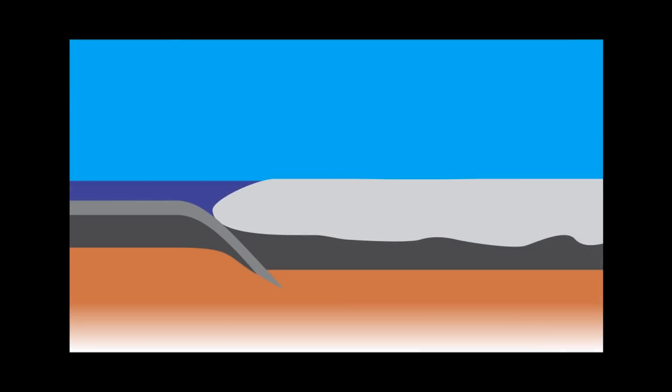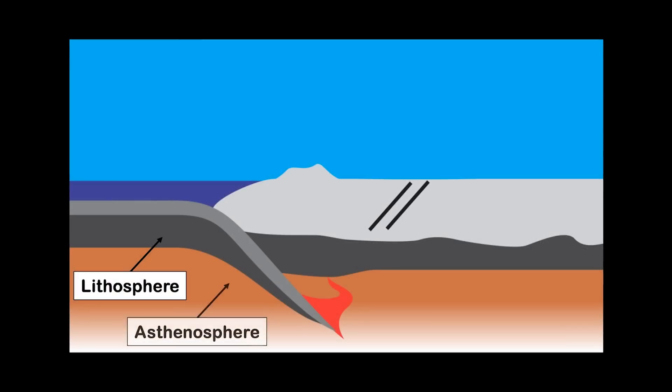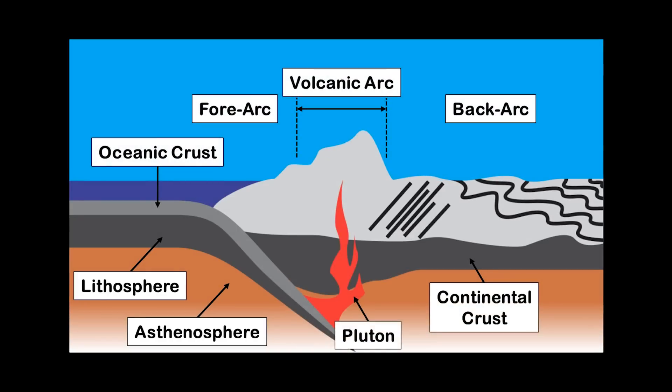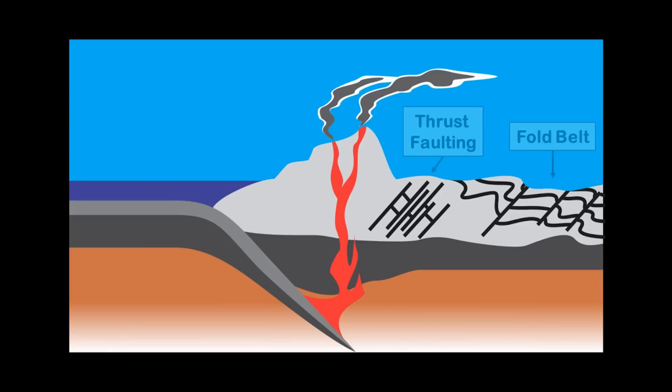We are going to start off by taking a basic look at a continental margin. Here we have an oceanic crust subducting the continental crust, creating a back arc where compression has caused a net shortening of the earth's crust, where thrust faulting and fold belts produce structural hydrocarbon traps.